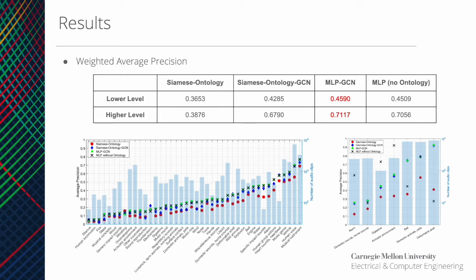We first evaluate the performance of the models using average precision, which is the area under the precision-recall curve and is a metric to evaluate how well the model predicts positive labels. The AP from each class is combined with a weighted average to get the AP score for each model. The left plot shows the subclass results and the right shows the superclass results. The Siamese ontology model generally has the worst AP scores across all classes and is actually worse than the baseline without ontology information. The best performing network is the MLP-GCN, which has a slight improvement over the MLP without ontology information.